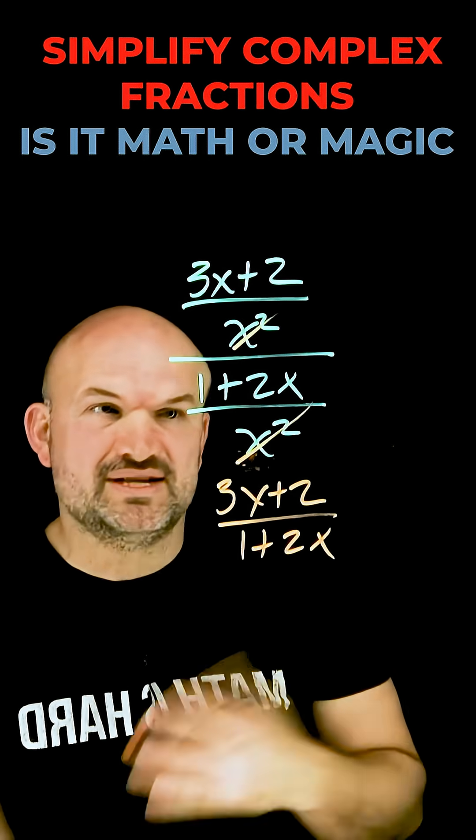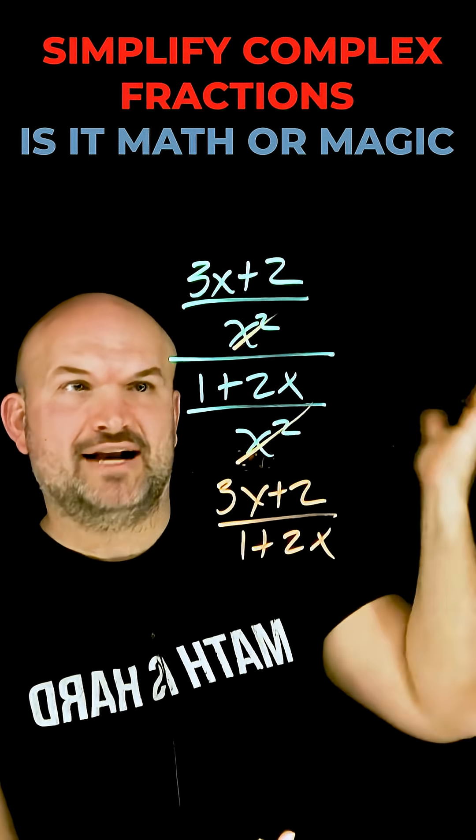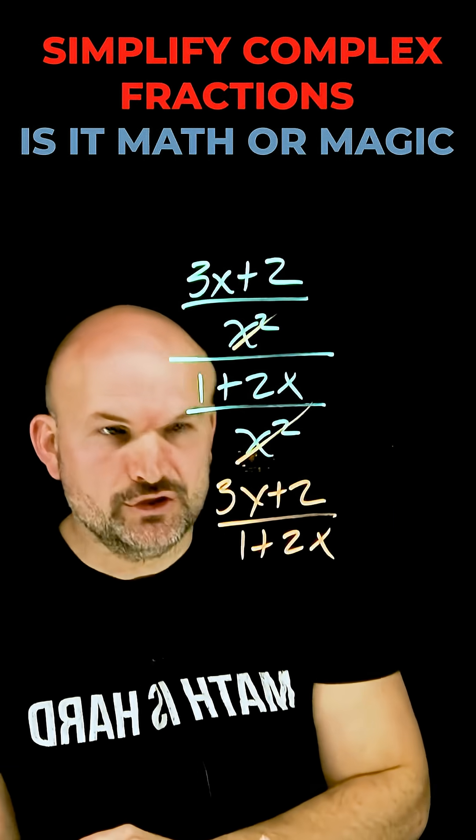I realize a lot of students get confused on this. Why is it you can just divide out those denominators and just take the numerator?